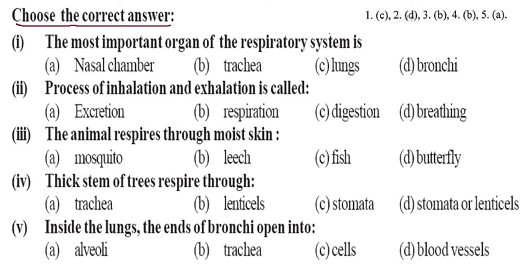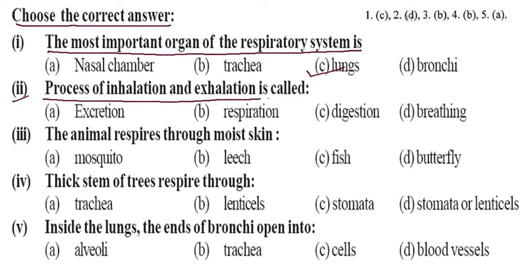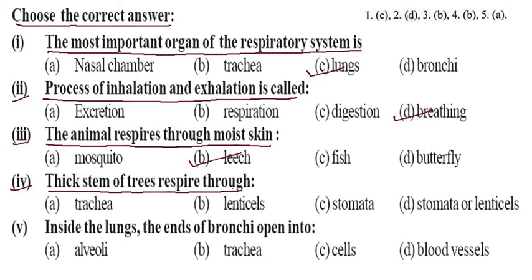Now, choose the correct answer. First: the most important organ of the respiratory system is the lungs. Second: the process of inhaling and exhaling is called breathing. Third: the animal that respires through moist skin is the earthworm — it is the leech. Fourth: thick stem respiratory pores are called lenticels.